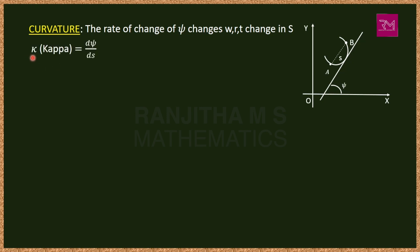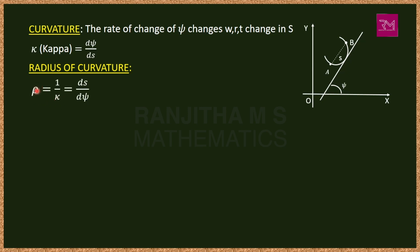Curvature is denoted by the symbol κ (kappa), equal to dψ/ds — the rate of change of the angle ψ with respect to arc length S. Since curvature and radius of curvature are inversely proportional, the radius of curvature ρ (rho) equals 1/κ, which is ds/dψ. The reciprocal of curvature is the radius of curvature.